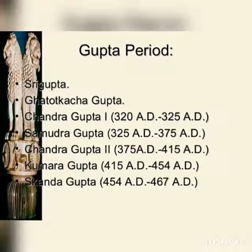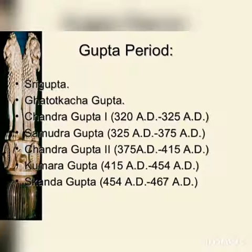Samudra Gupta was a staunch Hindu. The Allahabad Pillar inscription mentions the title Dharma Pracharabandhu for him, meaning he was the upholder of Brahminical religion. His major coin types include the archer type, tiger type, and battle axe type. On some of his gold coins, he is represented playing the veena.